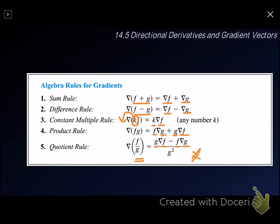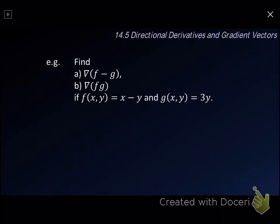For example, let's say we would like to find the gradient of f minus g, and also the gradient of fg, where f(x,y) equals x minus y, and g(x,y) equals 3y. Let's take a look at the first question — we want to find gradient of f minus g, which can be found by looking for gradient of f minus gradient of g.